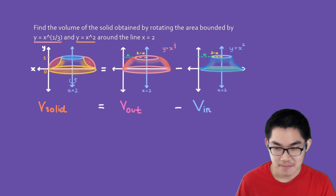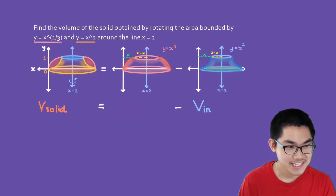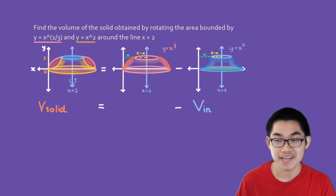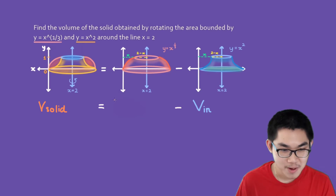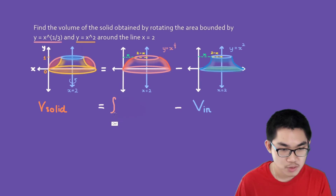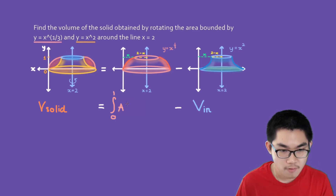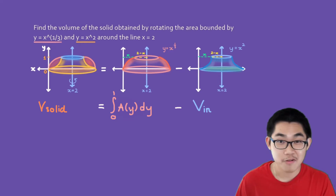Now, if you remember from my previous videos, what is the formula to calculate the volume of an object? Well, it's simply the integral from a to b. And in this case, a to b is the distance from 0 to 1. So the boundary goes from 0 to 1 of A(y) dy, where A(y) is the area of the cross-section.